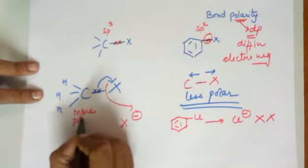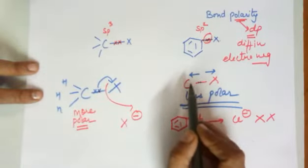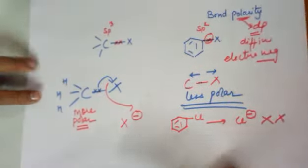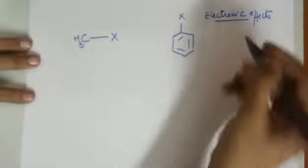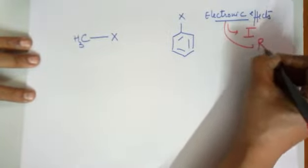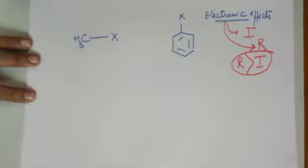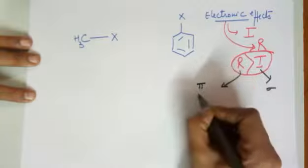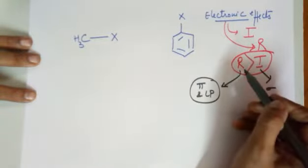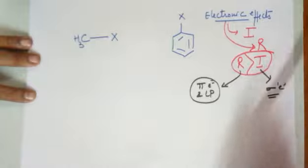So the C-X bond in alkyl halide is more polar because the electronegativity difference between carbon and halogen is greater, while in aryl halide the difference is less because the sp2 carbon has gained slightly higher electronegativity due to s-character. Coming to electronic effects — we are talking about inductive effect and resonance effect. Resonance effect is always stronger and more predominant than inductive effect. Inductive effect involves sigma bond electrons; resonance effect involves pi electrons and lone pairs.